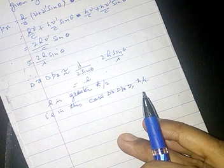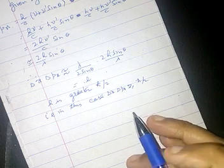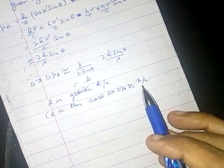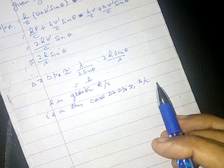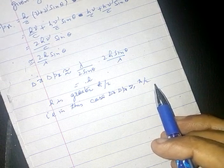So in this case, we have delta x times delta px which is greater than or equal to h bar upon 2. Hence, the experiment shows the validity of Heisenberg's uncertainty principle.